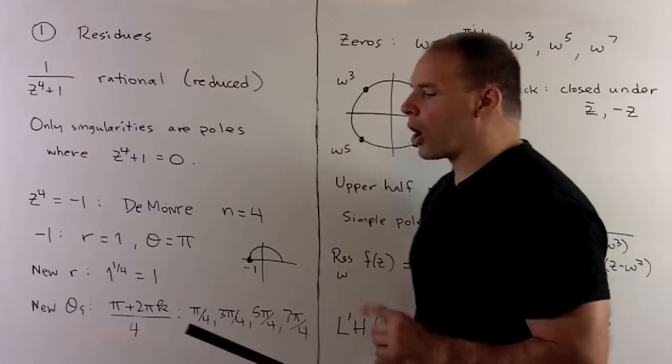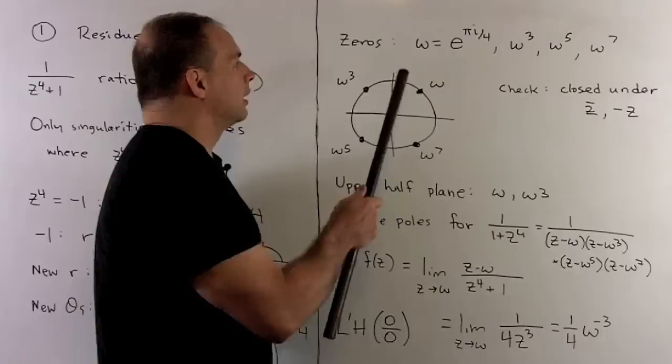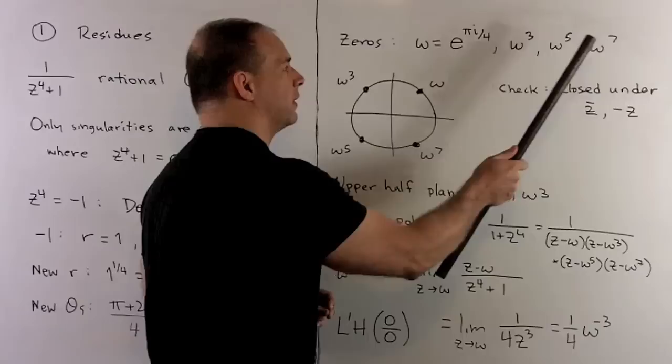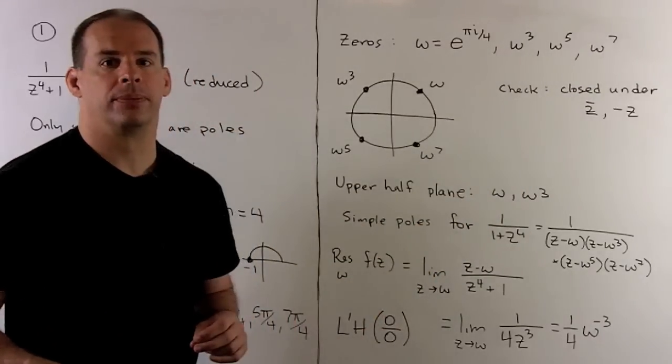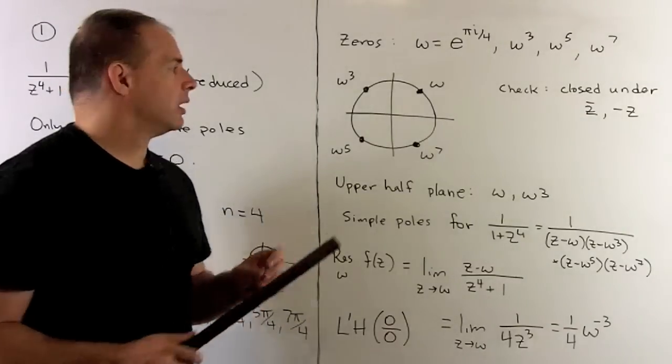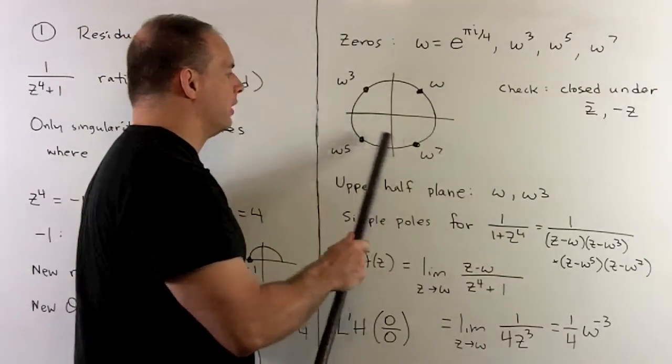Putting these together, our roots are going to be: we have omega equal to e to the pi i over 4, then its cube, 5th, and 7th powers. Now, we plot these in the complex plane. They're all in a unit circle, and they're all going to live on a square.